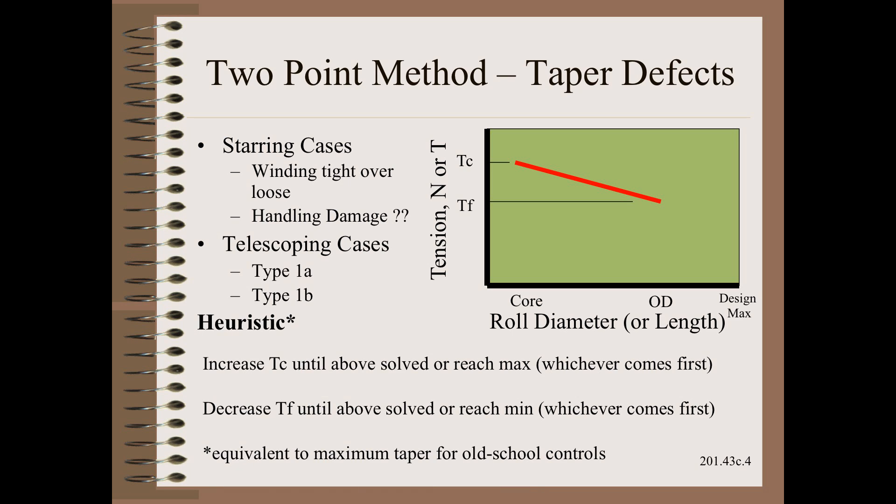Of course, the other category of defects, which is the largest by simple count, is not sensitive at all to winder tension settings. These defects might be caused by poor design, maintenance or operation, for example.